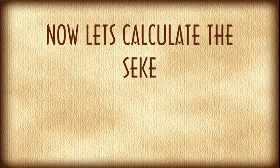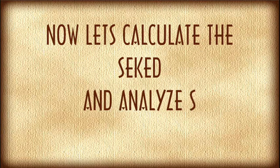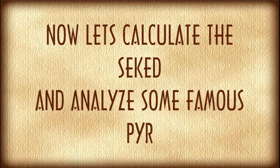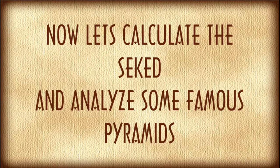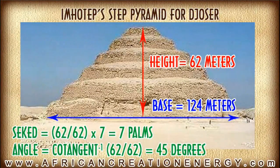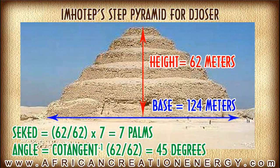Now that we understand how to calculate the Seqed and how inclined surfaces and angles were related and measured in ancient Egypt, let's do some analysis of some famous pyramids. The first pyramid is Imhotep's step pyramid built for King Djoser. This pyramid has a height of roughly 62 meters and a base of 124 meters. The Seqed for this pyramid is equal to 7 palms. Using the inverse cotangent, we find the angle to be 45 degrees.